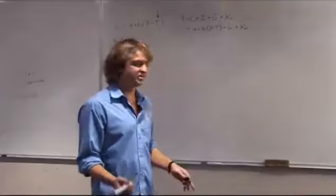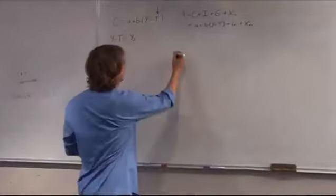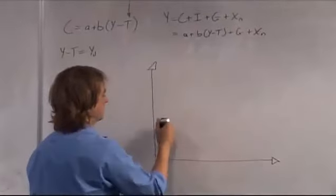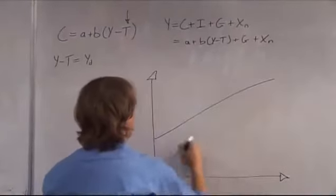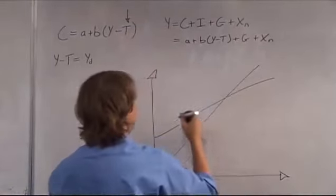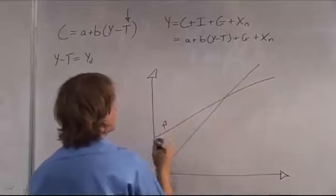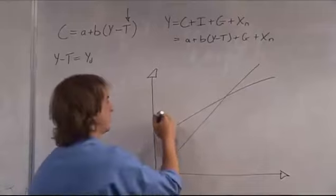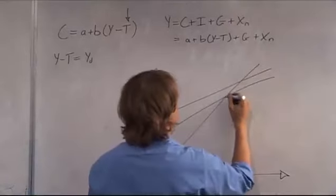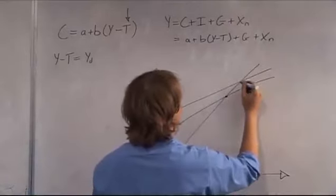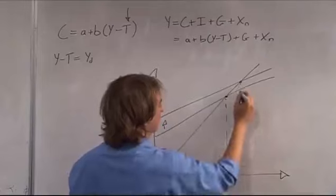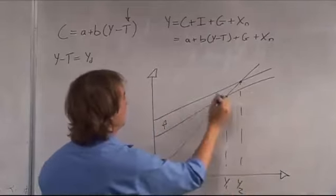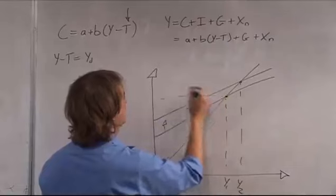By adding government expenditure into this equation, if government expenditure is greater than taxes, we can shift that curve upwards, because government expenditure will increase this intercept, and so it will shift it even further. So you can increase the value of your equilibrium output, and the value of your aggregate expenditure will also increase.